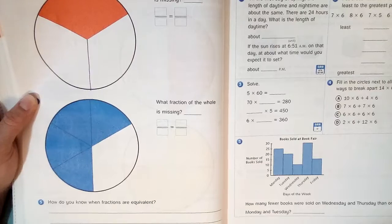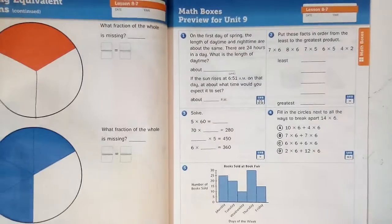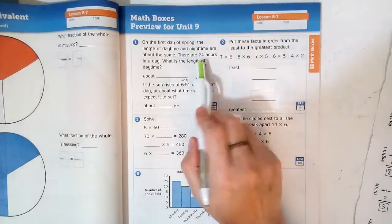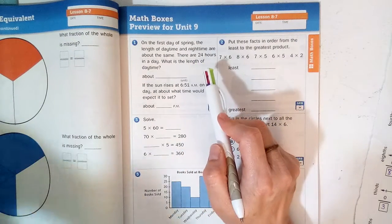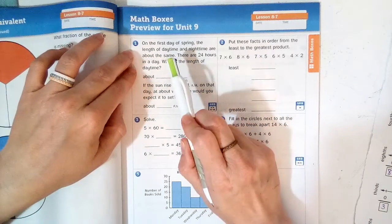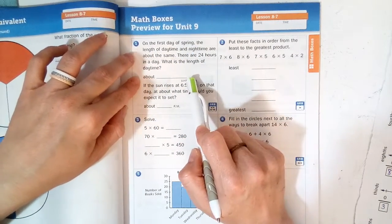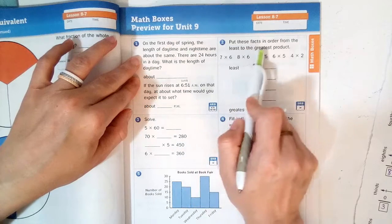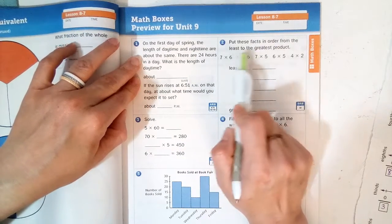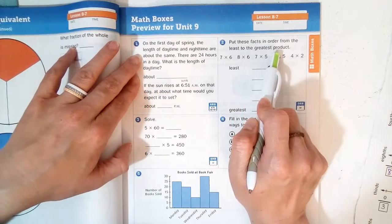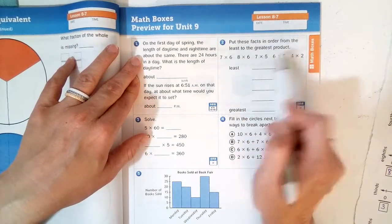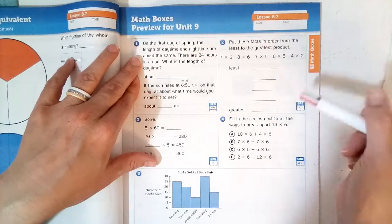You will also work on math boxes, page 271 today. So let's take a look. Oh my gosh, this is how many times have passed? Length of day. So you might want to do that on a different piece of paper. Put these facts in order from least to greatest. So that means smallest to largest product. And remember, a product is the answer. So which one is the smallest answer? Write the answer. Smallest answer, biggest answer.